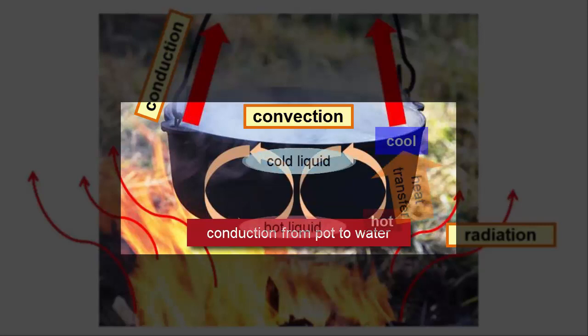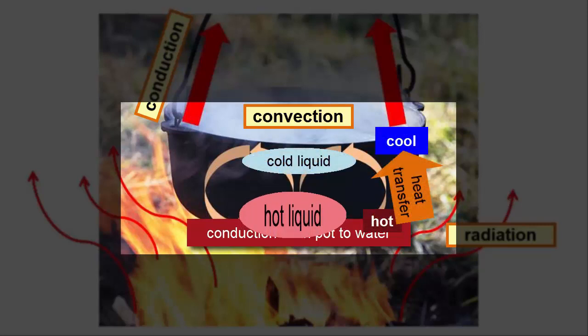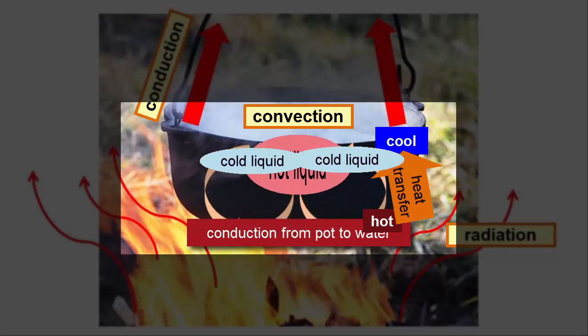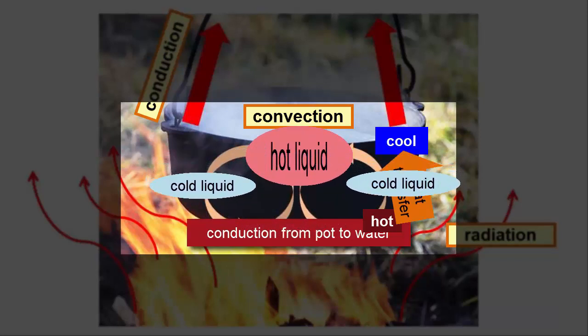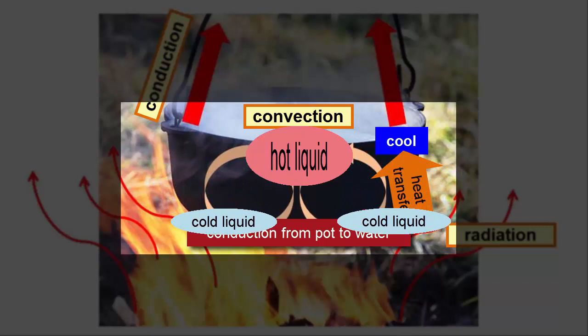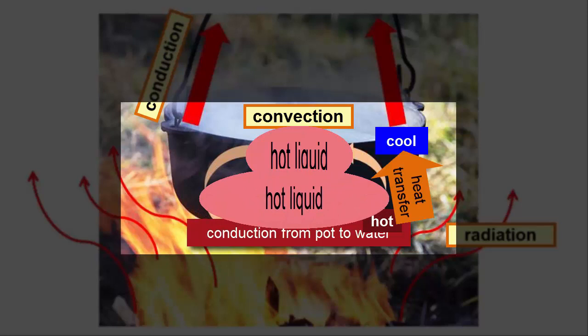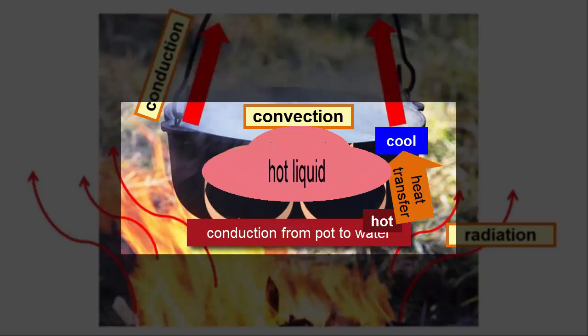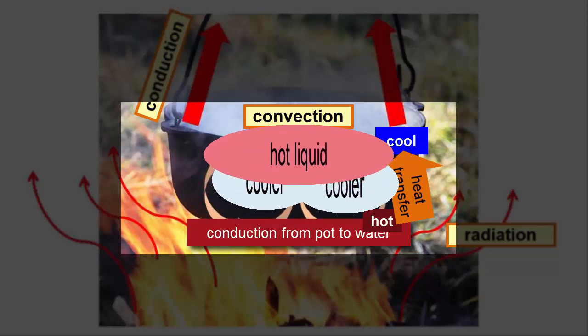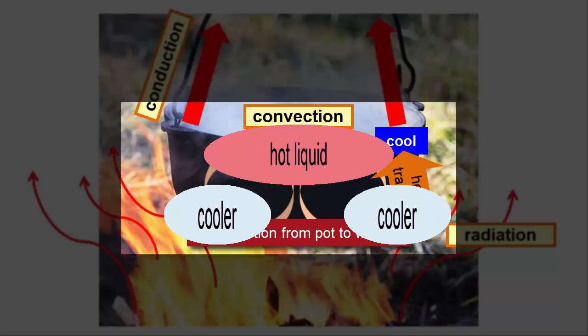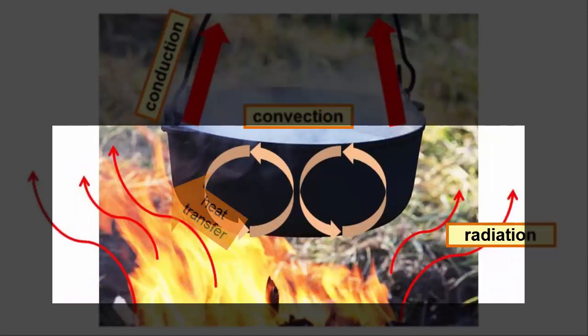That heat makes the water expand and become less dense. That water then rises to the top of the pot, displacing the colder, denser water at the surface, which then sinks to the bottom and is heated by the conductive pot. Through this process, heat is rapidly convected through the entire fluid in a continuous cycle.